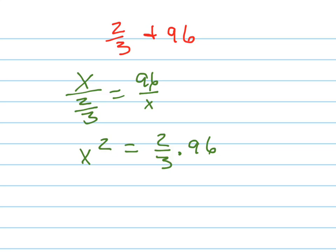96, break this down. 96 is 3 times 32, right? So those 3's cancel. Now I get 2 times 32.